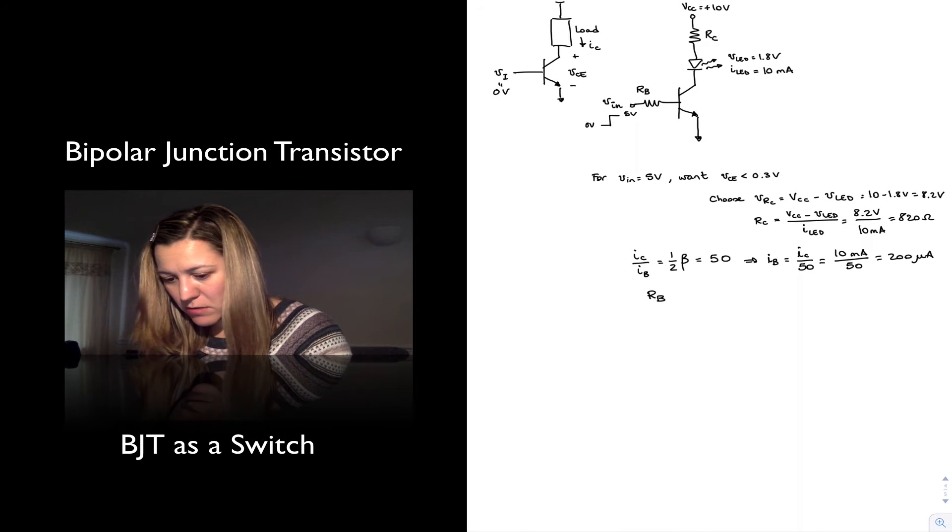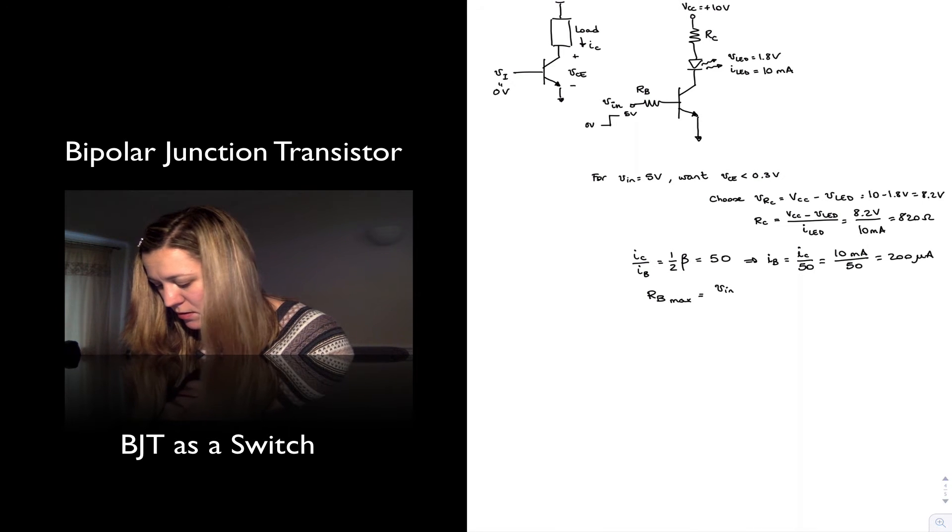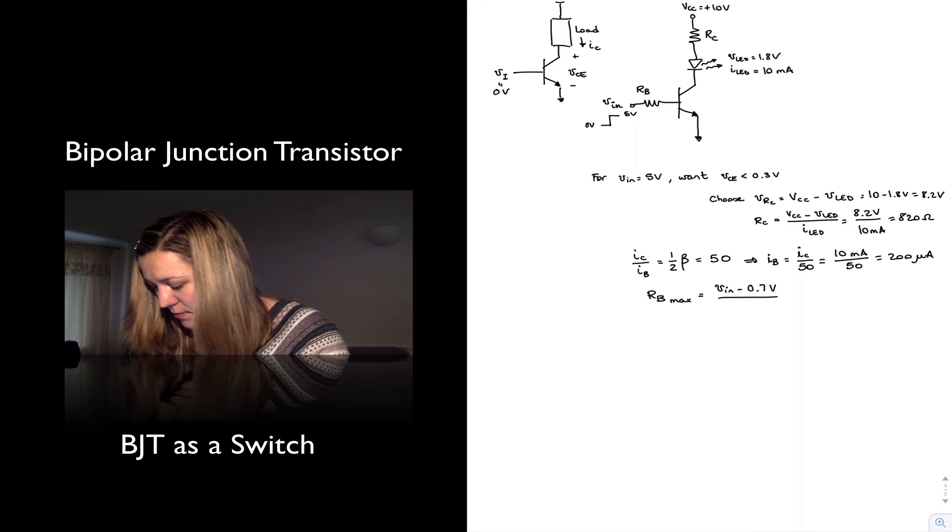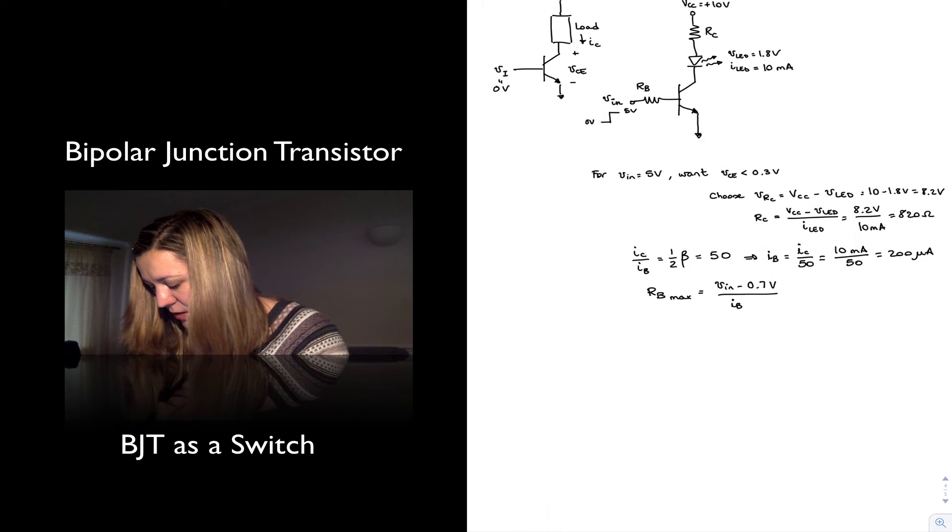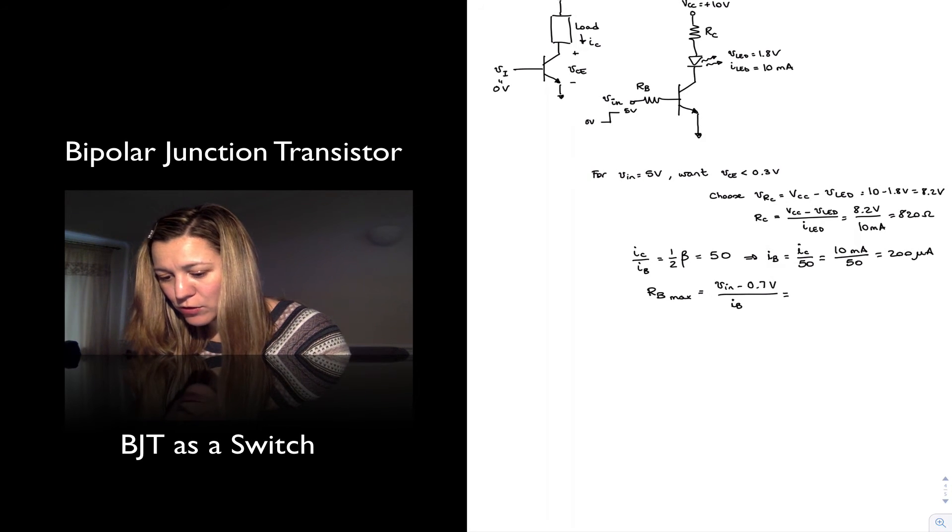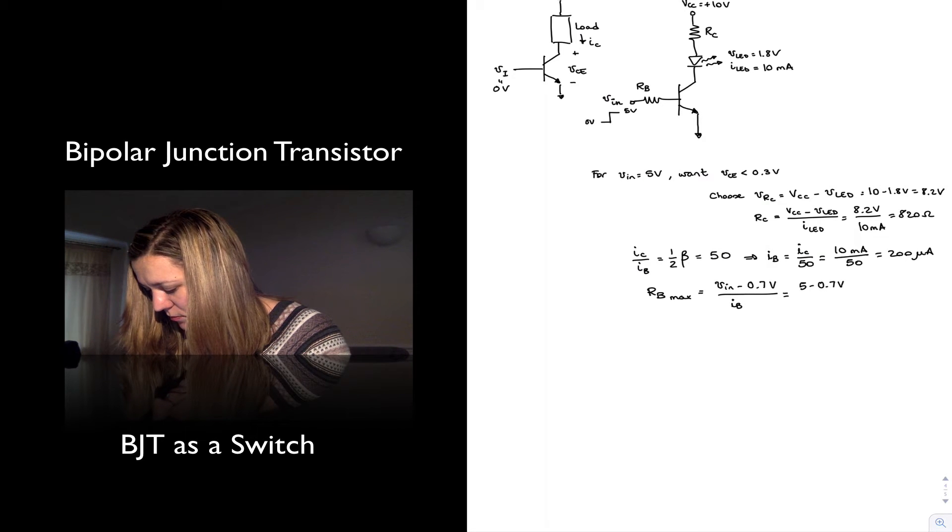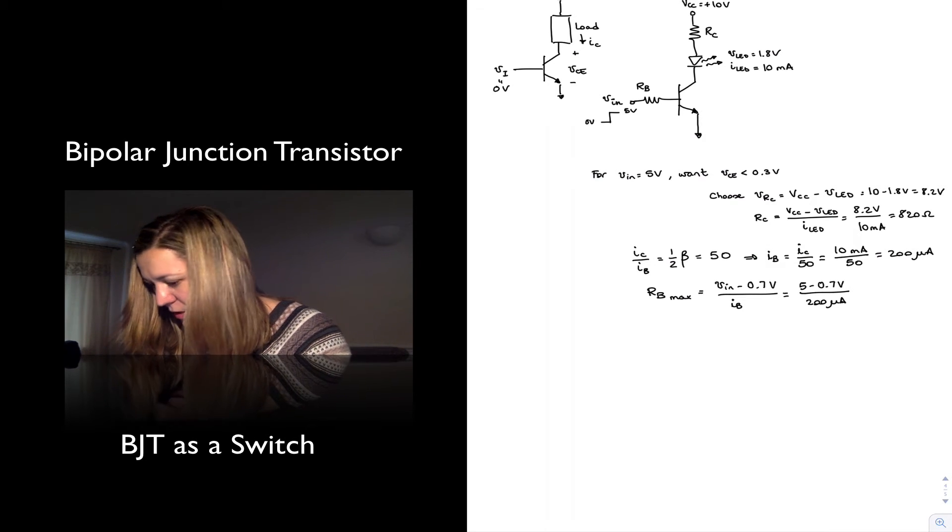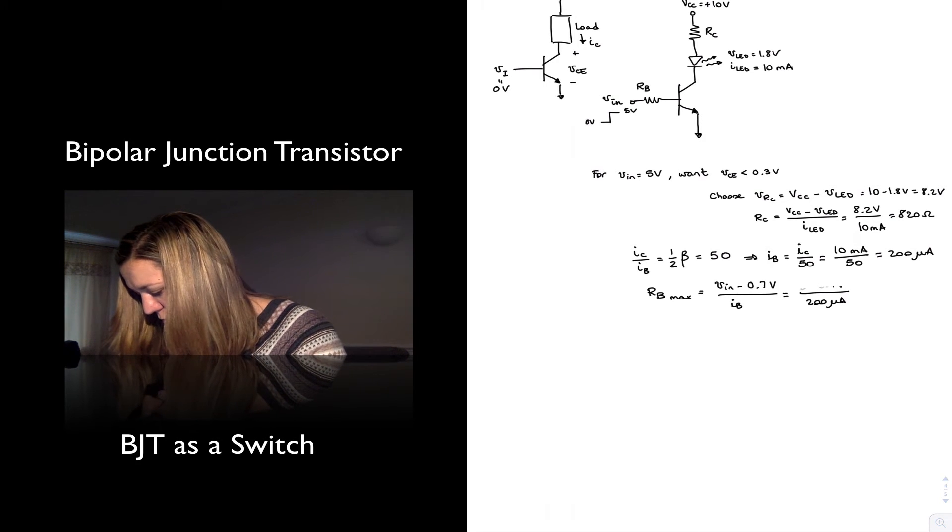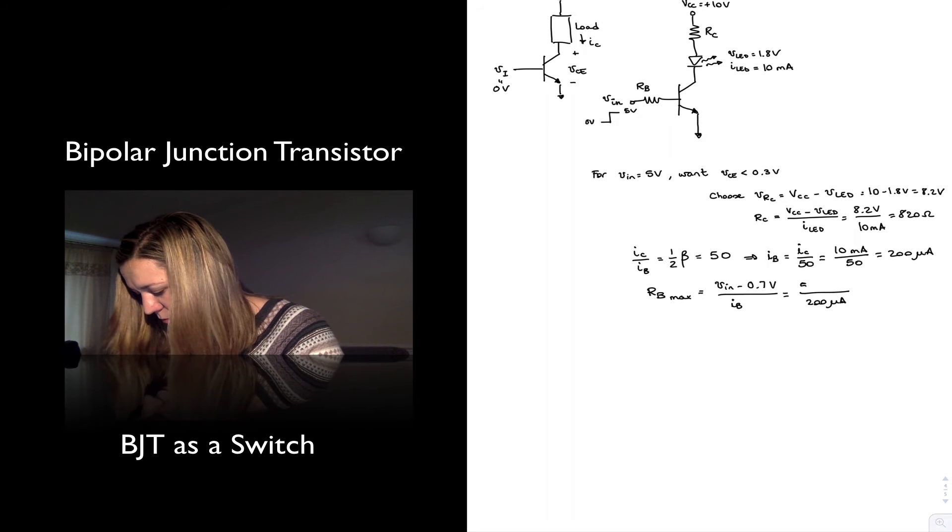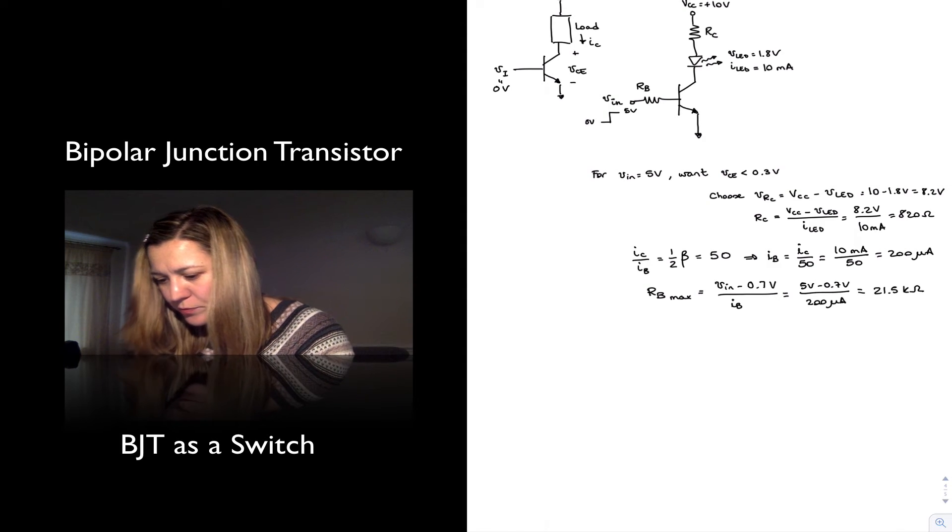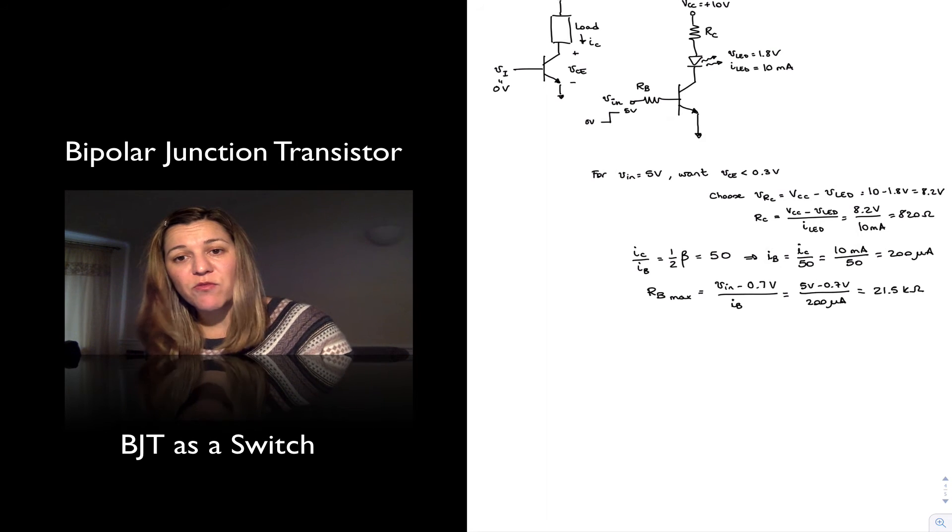And now I can just design my value of RB to make that happen. So RB maximum will be equal to VIN minus the 0.7 volts that I need to turn on my base emitter junction, divided by my IB. And I should call this IB saturation, but I just made the point. So VIN is 5 volts minus 0.7 volts divided by 200 microamps, and that's equal to 21.5 kiloohms. That's the maximum value for my base resistor.